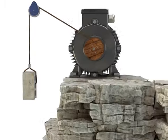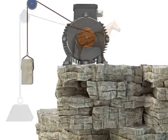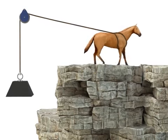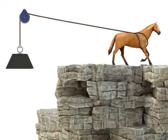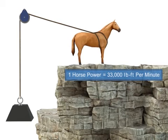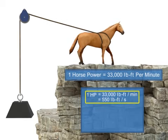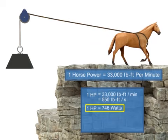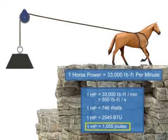Horsepower is defined as the rate at which work is accomplished. Years ago, before motors were invented, most work was accomplished manually. It was estimated that one horse could accomplish approximately 33,000 pound-foot of work per minute, and thus the term horsepower was born. In modern terms, horsepower is simply another unit of measurement for power, and can be translated into watts, BTUs, joules, or any unit of power. Units that measure motor power are typically in horsepower or watts.